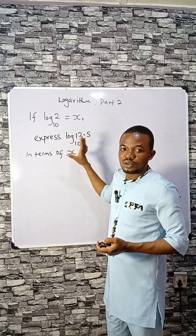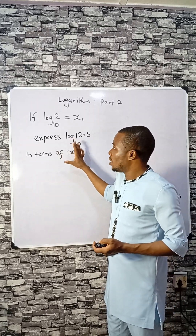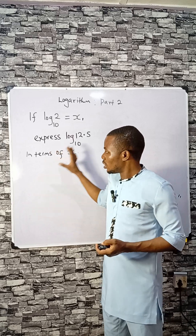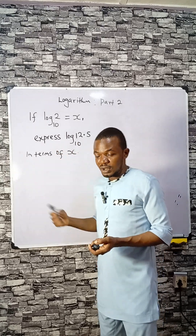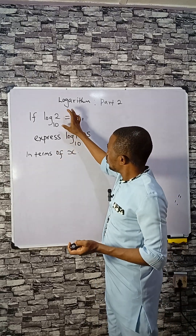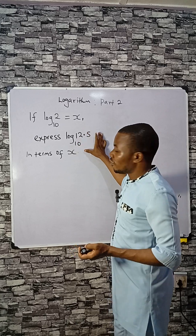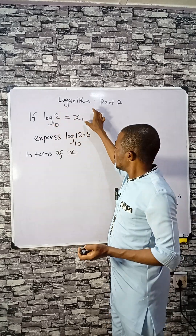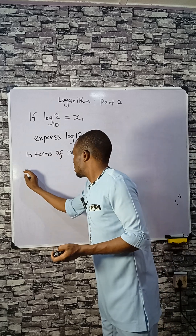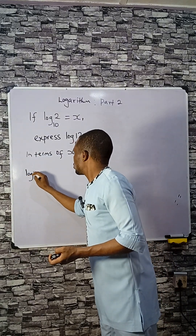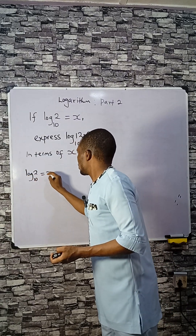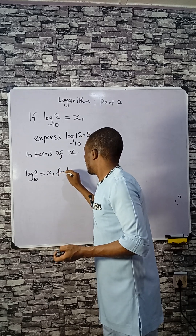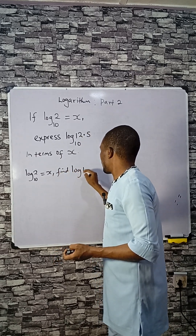Let's do this very fast — don't waste time. I had solved this before; this is Part 2. Let's apply another method to see how we can do this very fast, in case you are writing exams. Let's express log 12.5 base 10 in terms of X, given that log 2 base 10 equals X. We have to find log 12.5 base 10.